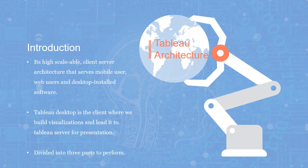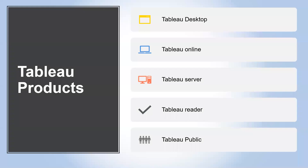The architecture is divided into three parts. As we also learned in the first session, the different Tableau products are: Tableau Desktop, Tableau Online, Tableau Server, Tableau Reader, and Tableau Public.